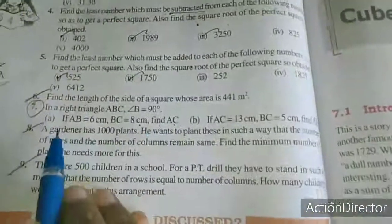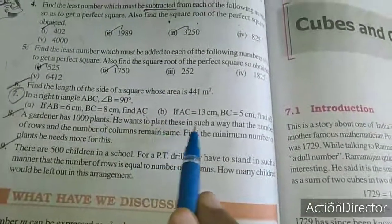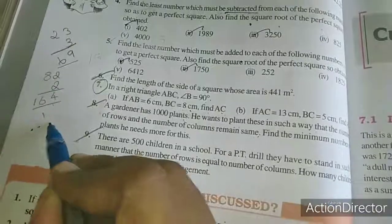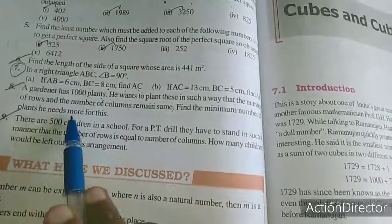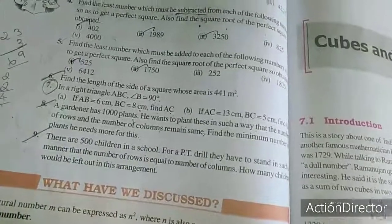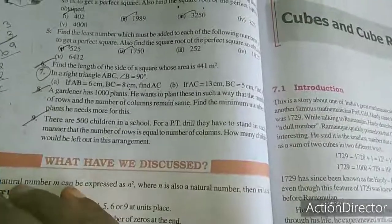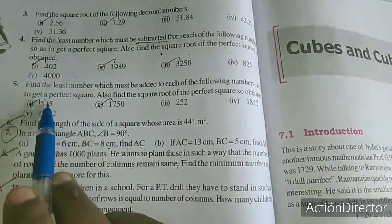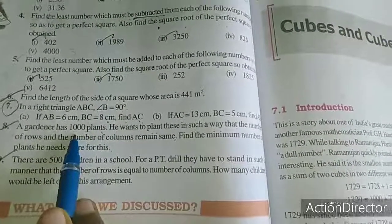Now we will move to the eighth sum. See here, a gardener has thousand plants. He wants to plant this in such a way that the number of rows and the number of columns remains same. This is like the last exercise we worked on something like that only. So we want to find out the square root for this. It is one of the perfect square, the total number of columns we want to indicate. So square root for 1000.